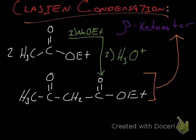In this video I'm going to talk about the reaction mechanism behind a Claisen condensation reaction. A Claisen condensation reaction — not to be confused with a Claisen rearrangement reaction — is a reaction in which one takes either two esters or an ester and another carbonyl compound in the presence of a strong base, and that will allow one to form either a beta-ketoester or a beta-diketone.